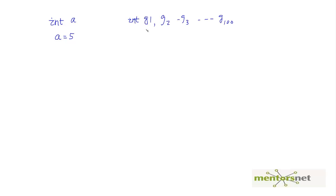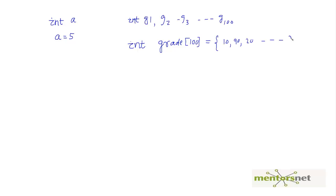The way to define an array is: first specify the type — in this case integer — then give the array a name, say 'grade', then specify the number of elements, say 100. You can then assign the grades within curly braces, for example: 10, 90, 20, and so on.